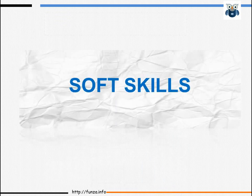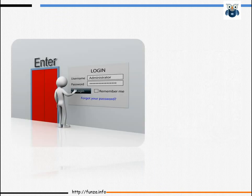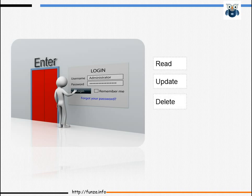Let us start by looking at soft skills. System administrators have an attention to detail, which is easier to possess if you are interested in technology. For example, company data is hosted on servers and access to it is determined by administrators. Which staff members can view this data? Who can update it? Who can delete it? Administrators play a key role in such decisions.